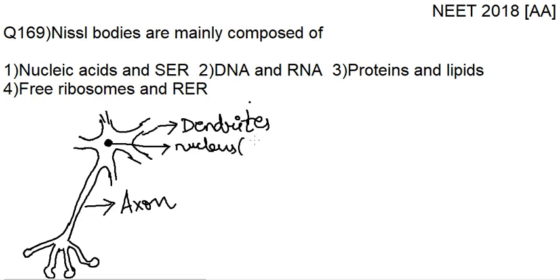The DNA will be present inside the nucleus. So you can eliminate the second option — DNA is not present in the missile granules, it is present in the nucleus. Missile granules are present around the soma or the nucleus. This yellow portion of the granules are known as missile granules.